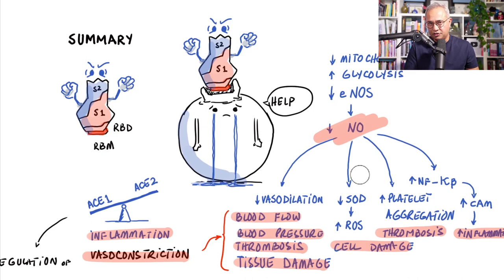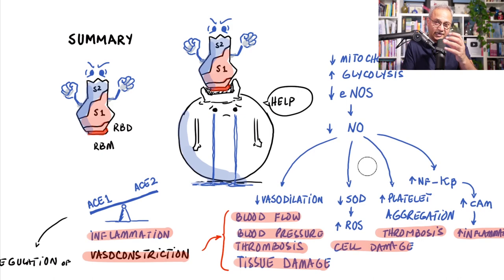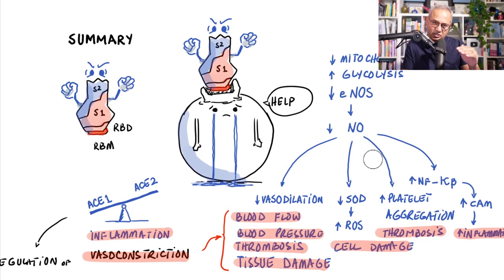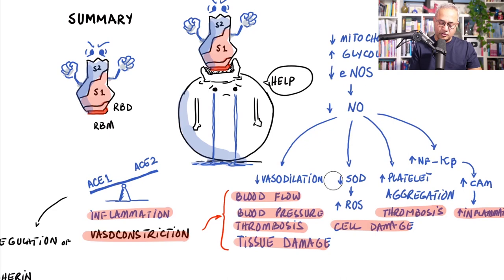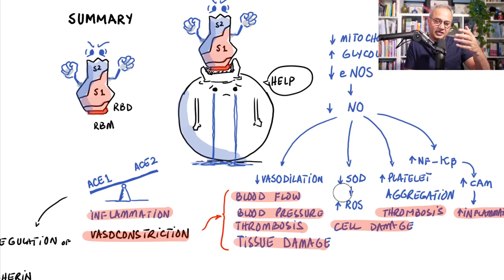Reduced nitric oxide causes dysfunction of the endothelium: vasoconstriction and less vasodilation, meaning less blood flow to tissues, which causes tissue damage, hypoxia, and acidosis. When blood vessels cannot dilate properly, nutritional and oxygen supply decreases and carbon dioxide removal is reduced. Blood pressure alterations also occur — when blood vessels are always constricted due to insufficient nitric oxide, blood pressure changes result.